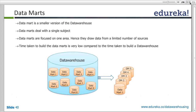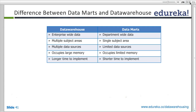Going through the differences one by one: a data warehouse is enterprise-wide data, while a data mart is department-wide data. A data warehouse has data from multiple subject areas; a data mart has data from a single subject area. Both can technically have multiple data sources, but a data mart will pull from a specific data area relevant to its department.